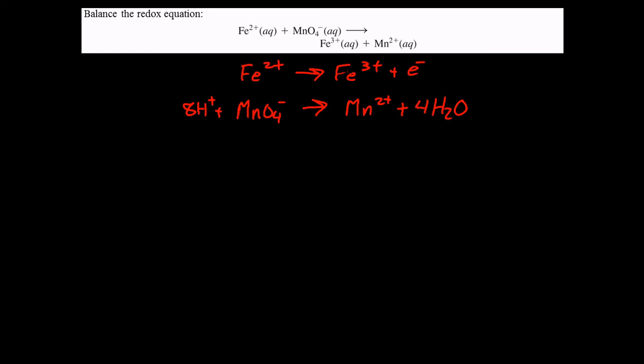So now all the masses are balanced, so we need to balance the charge. So we have eight plus negative one gives us plus seven, plus two. So if we have plus seven on the left, plus two on the right, we need five electrons on the left.